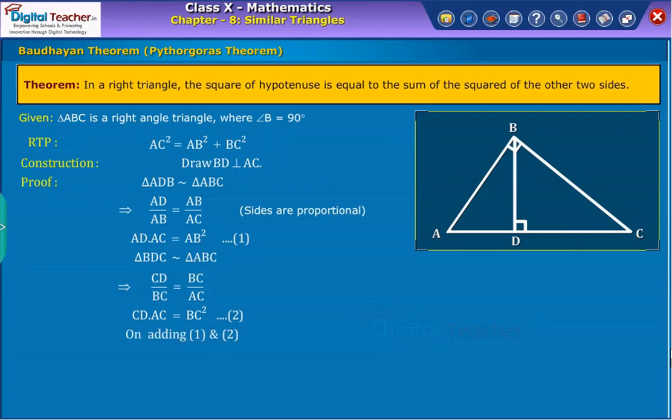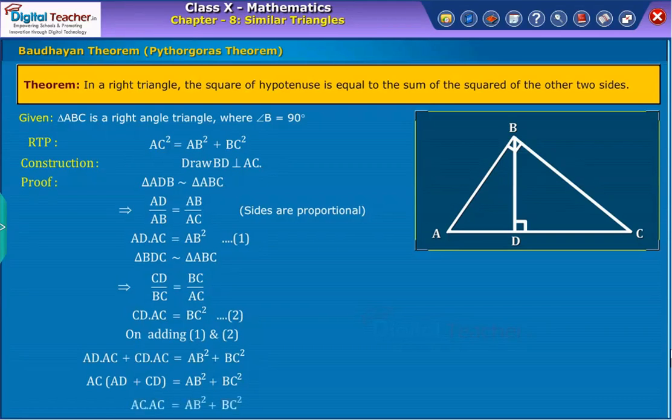Now, add equation 1 and 2, then we get. Thus, AC square is equal to AB square plus BC square. And therefore, through construction.